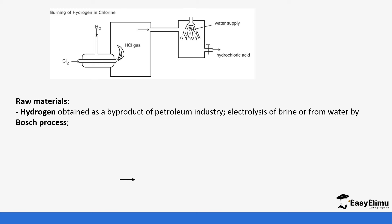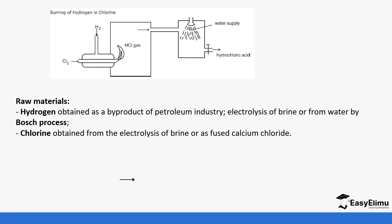We have mentioned these sources previously: products of the petroleum industry — recall we talked about cracking, where hydrogen is one of the products formed — electrolysis of brine, which we will cover in electrochemistry in Form 4, and also electrolysis of water.